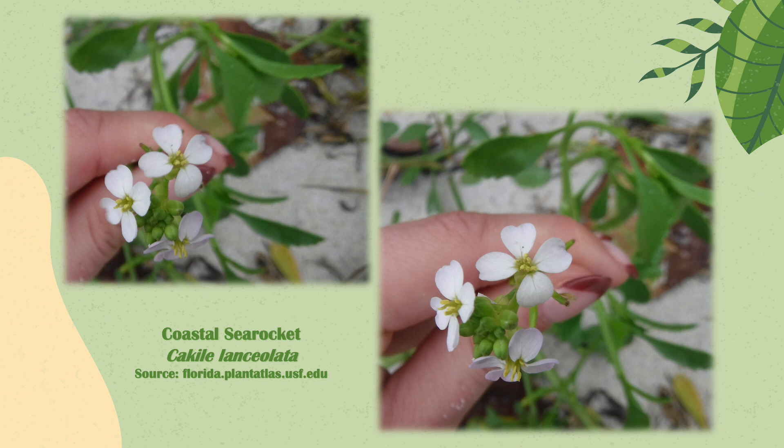This is the coastal sea rocket, Cakile lanceolata. This plant is actually edible — the leaves and stems can be eaten raw or cooked, and it has a mustardy flavor.